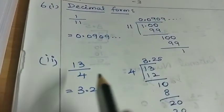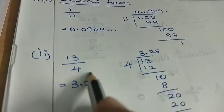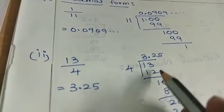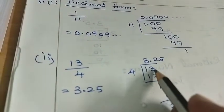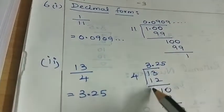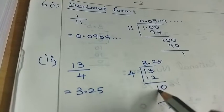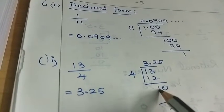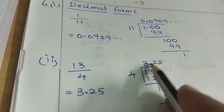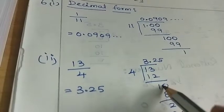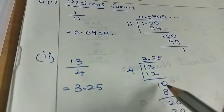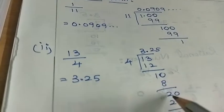Second sum: 13 by 4. It is simple. 13, 4 will divide. 4 threes are 12, one balance. Eight balance.